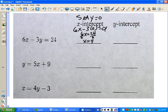Now, to find the y intercept, you're going to set x equal to 0. So in this case, you'll say 6 times 0 minus 3y equals 24.